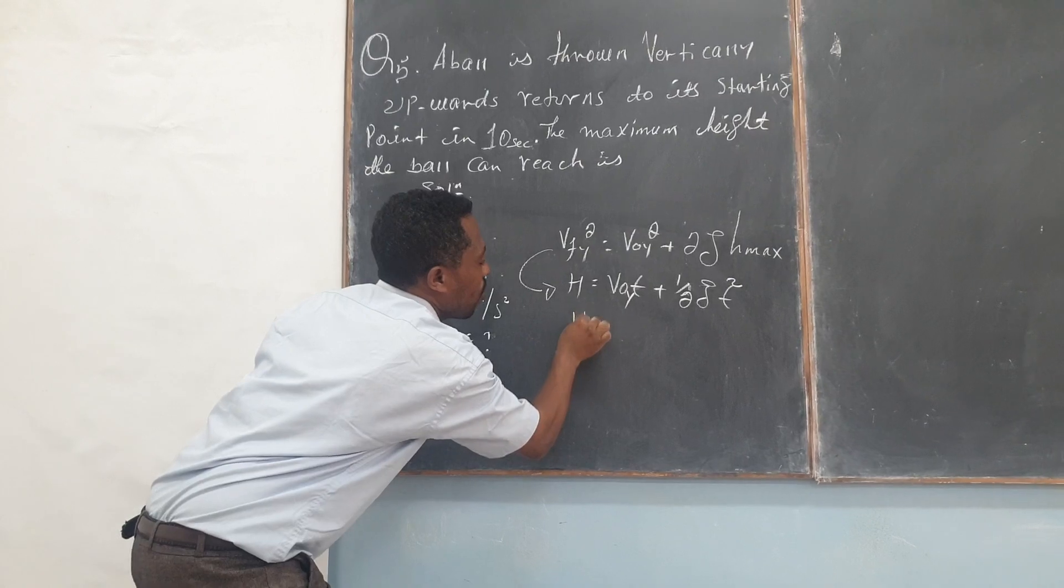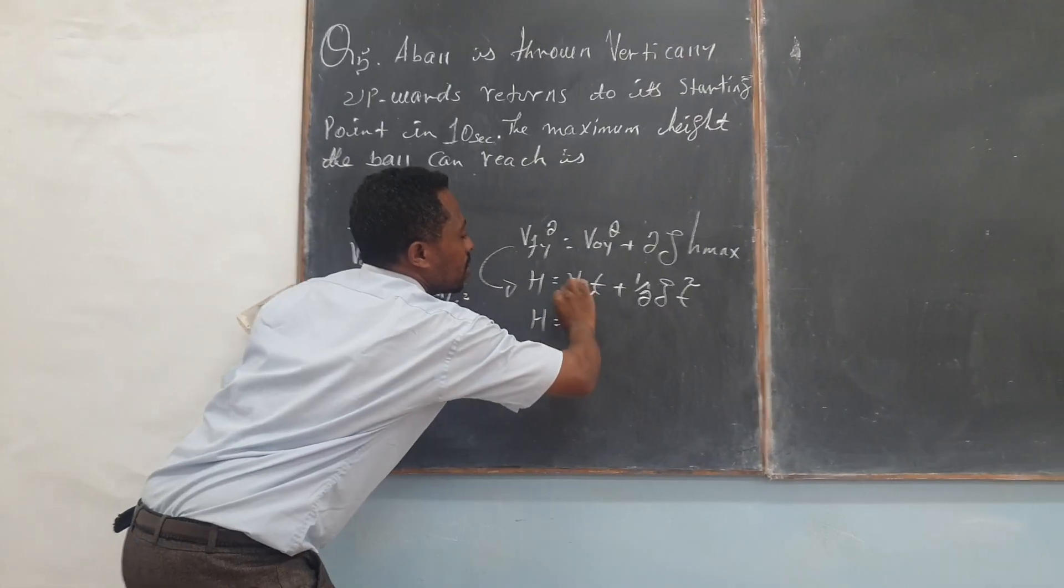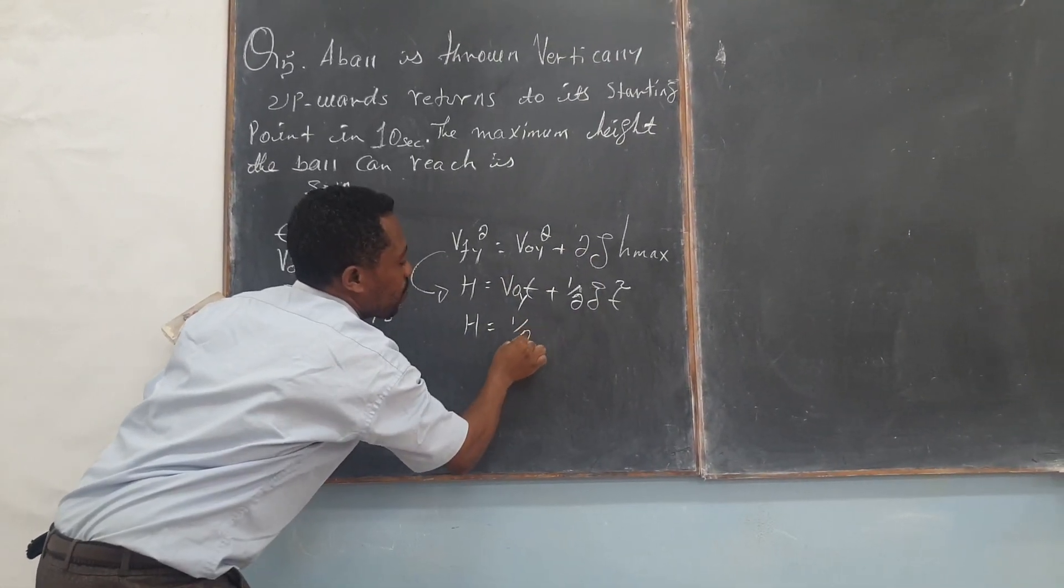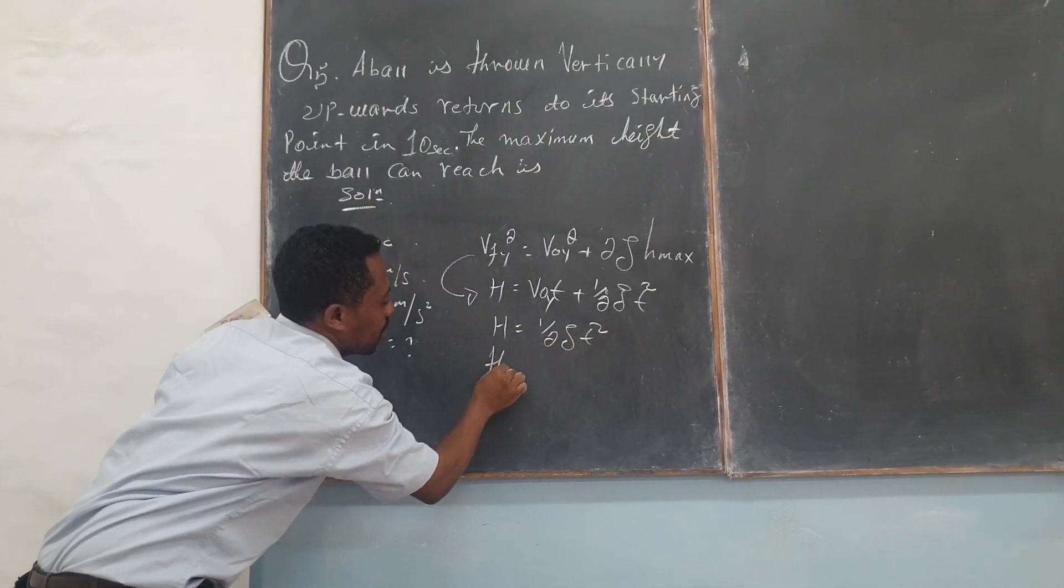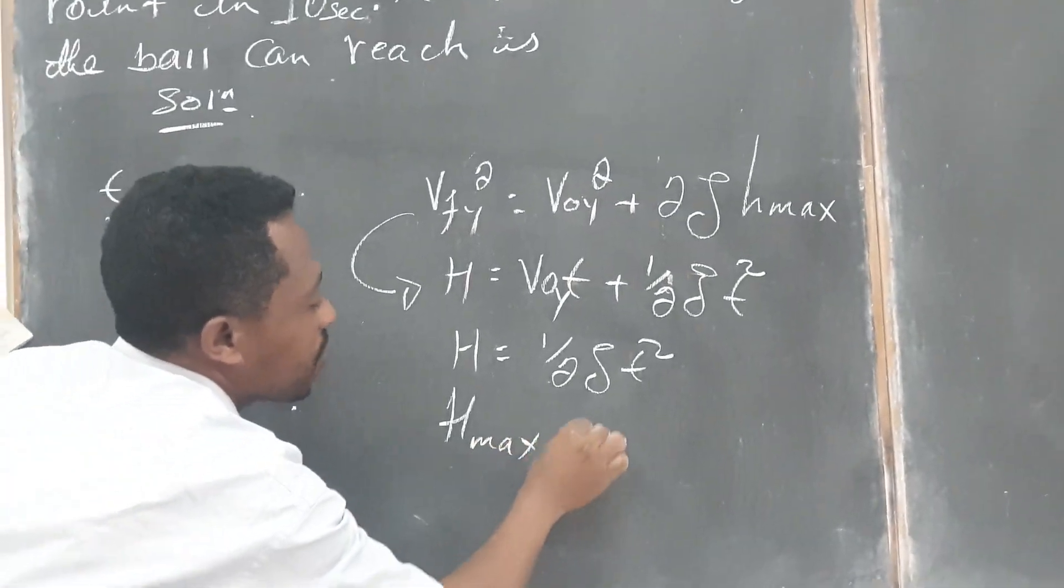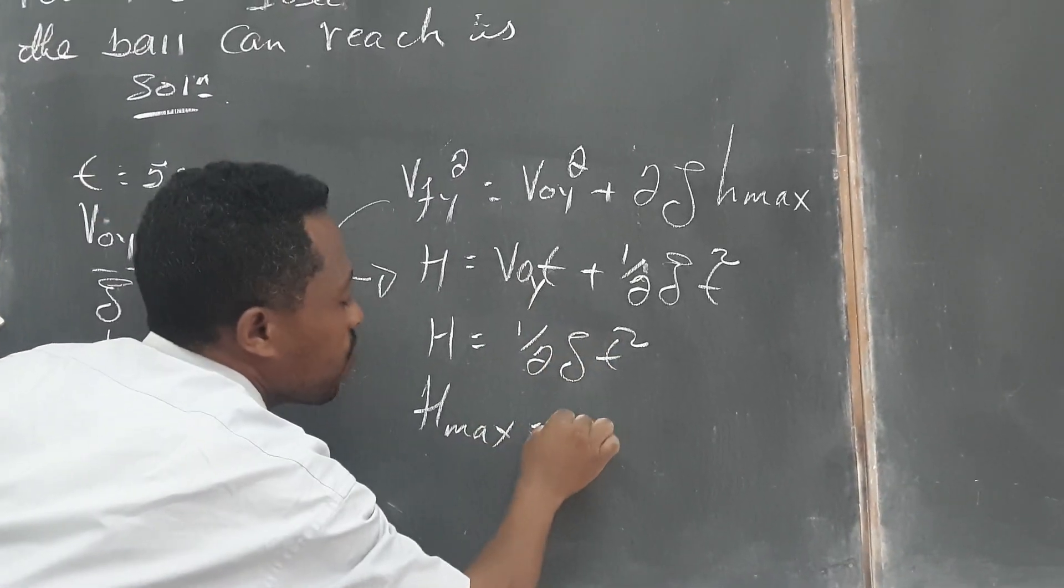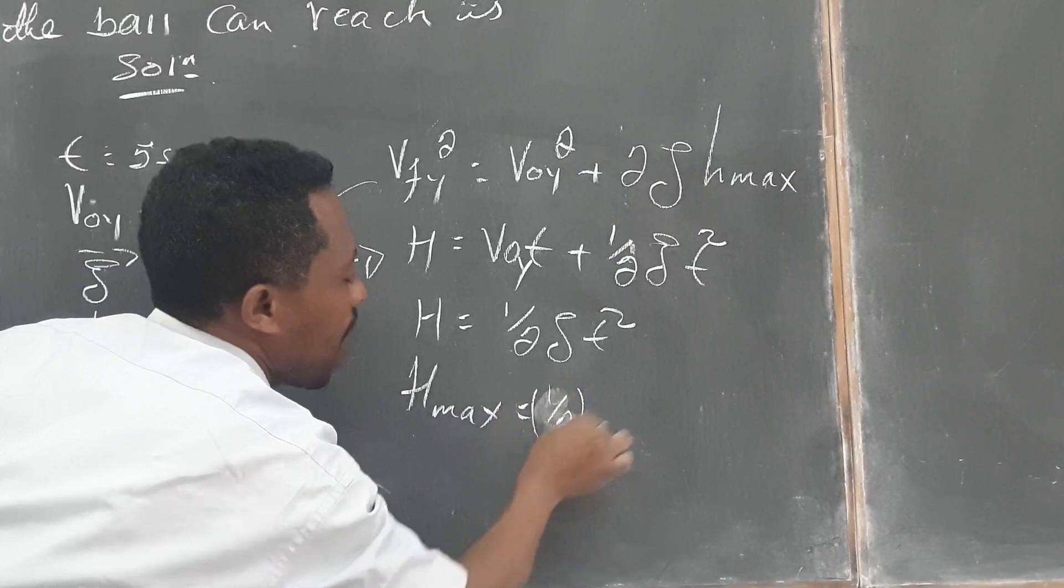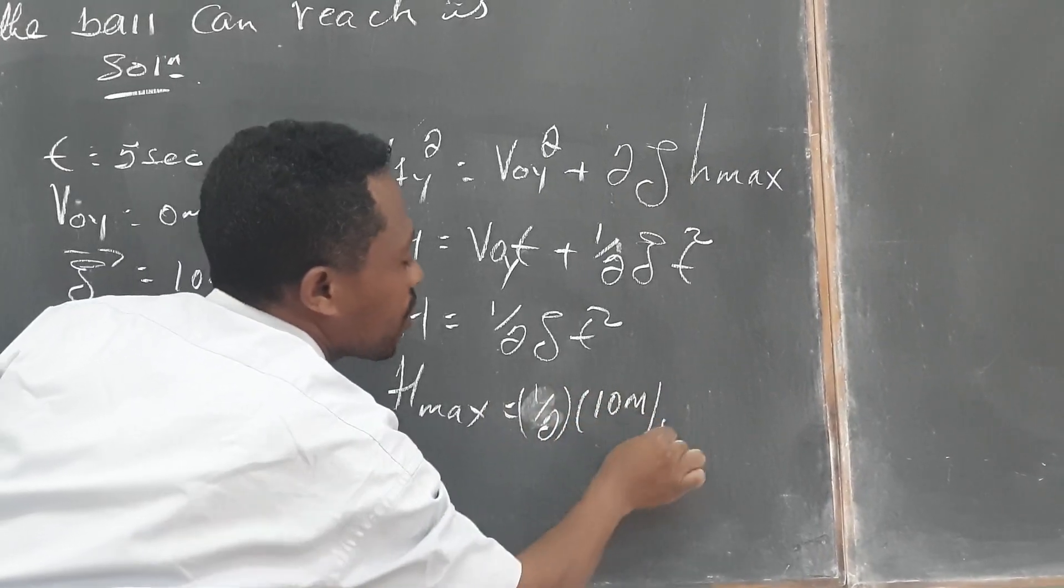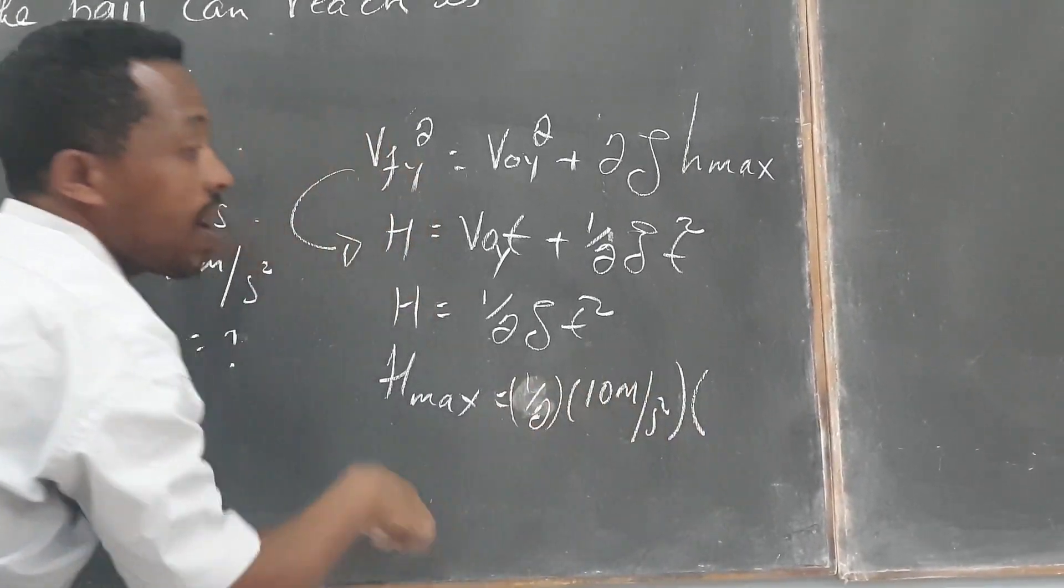Now H becomes, or H maximum becomes, this is 0, simply 1 over 2 G square of T. Square of T, H max, H max becomes 1 over 2 times 10 meters per second. And then T is 5.